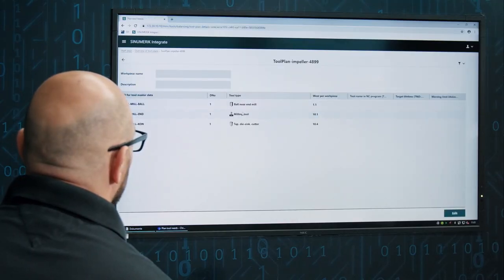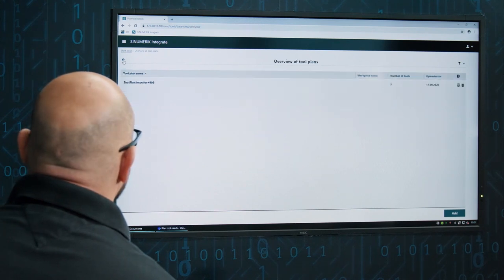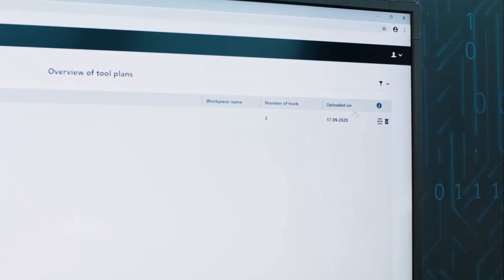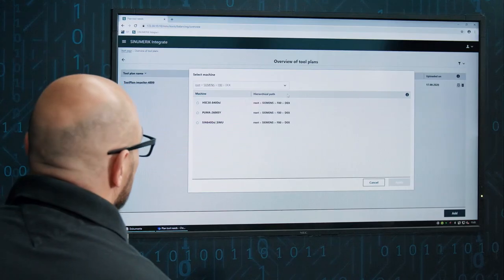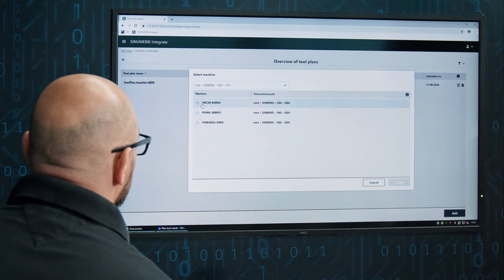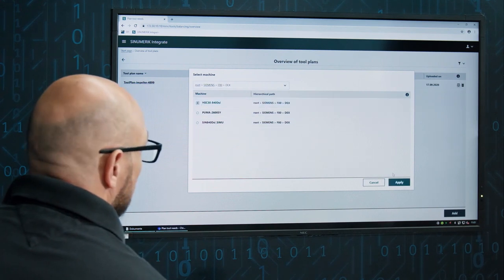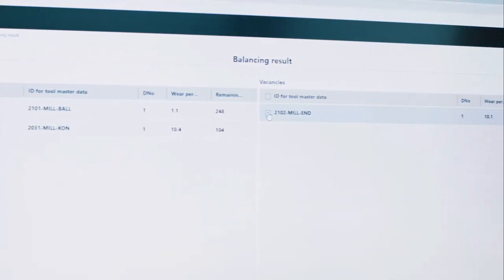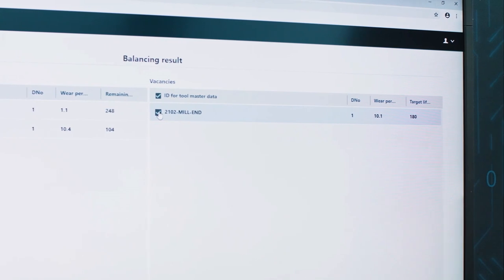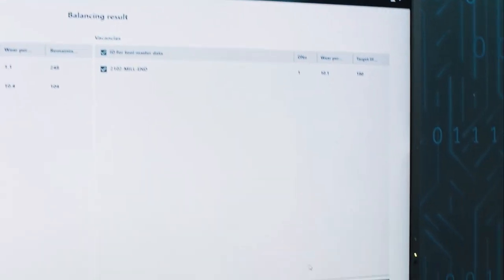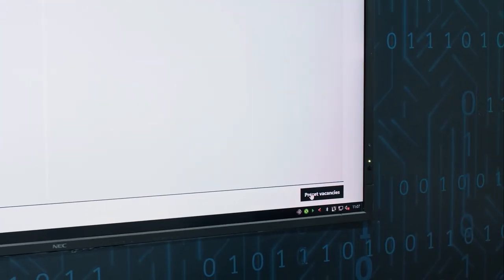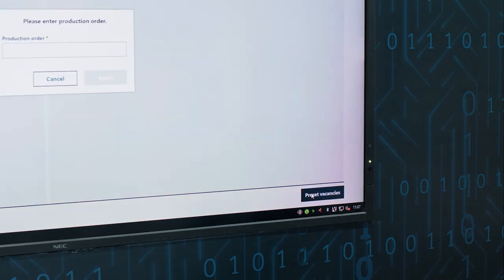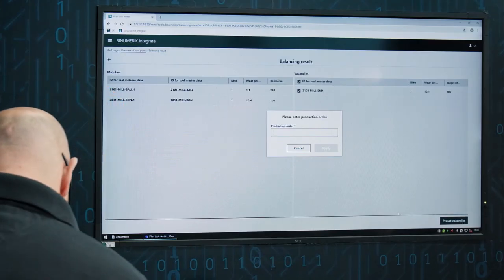So how about using software instead to effectively plan the tool requirements? This would look like this. Based on the tool plan provided in the application, the balancing is carried out for the respective machine. And as a result, we learn which tools are already on the machine and which are still missing. With simple means, it can then be determined which tools are already available somewhere on the shop floor. And the tool presetter can then prepare the missing tools exactly when they are needed.